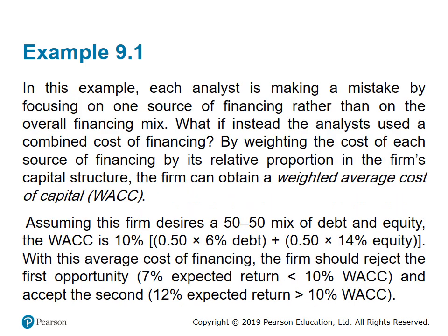This example shows that each analyst is making a mistake by focusing on only one source of financing. The first focused on the cost of debt, and the second on the cost of equity. Instead, the analysts should use a combined cost of financing by weighting the cost of each source by its relative proportion. Assuming the firm desires a 50/50 mix of debt and equity, the WACC is 10%: 50% × 6% (cost of debt) + 50% × 14% (cost of equity) = 10% weighted average cost of capital.